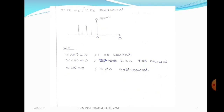What about anti-causal? Non-causal and anti-causal are different. For anti-causal, x(n) is equal to 0 when n greater than or equal to 0.